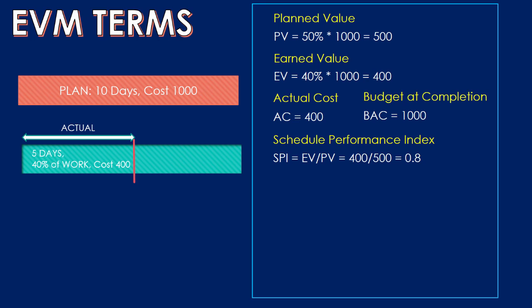Our earned value is 400 and our planned value is 500, so the SPI is 0.8. A number less than 1 means we are behind schedule; a number greater than 1 means we are ahead of schedule. The next index is the Cost Performance Index (CPI), which measures our cost efficiency. Our earned value is 400 and the actual cost is also 400, so CPI = 400 / 400 = 1. A CPI greater than 1 means we are under the planned cost; a CPI less than 1 means we are over budget.